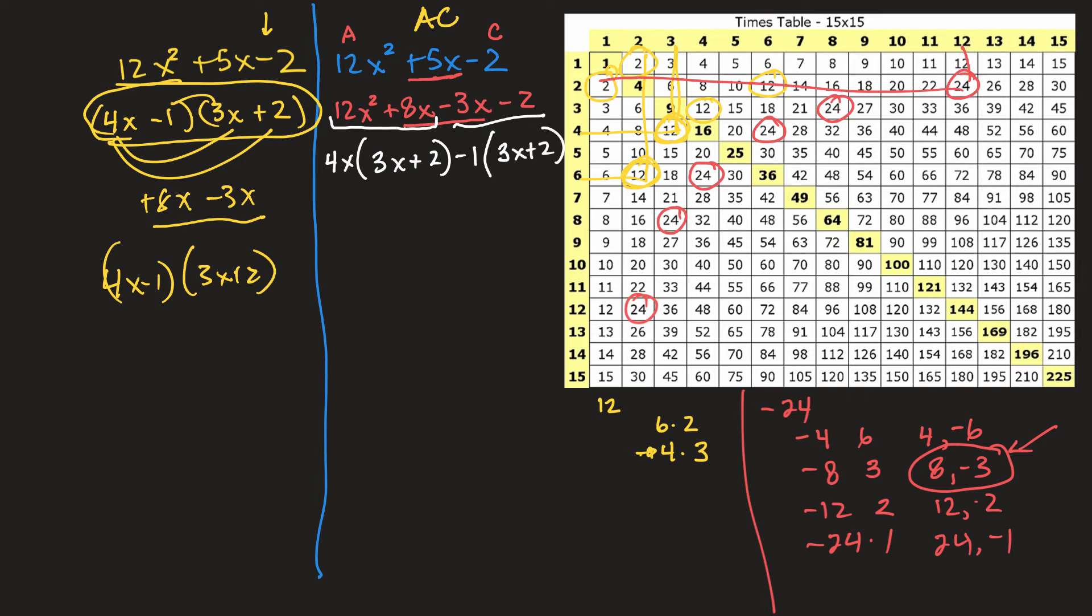Now, notice that in this term and in this term, they each have a 3x plus 2. If that happens, then I can factor it further to be 3x plus 2. So it gets rid of those two. And then what's left is a 4x minus 1. That's the AC method. But notice they're the same. They're in the different order. But that's the commutative property. That it doesn't matter what order you multiply things in.